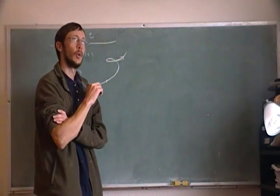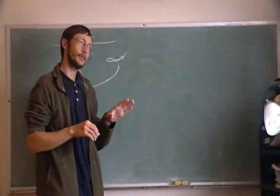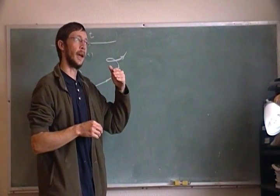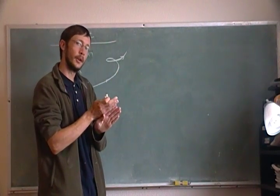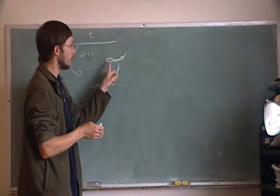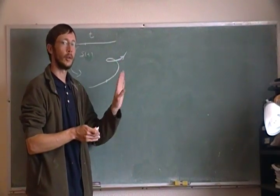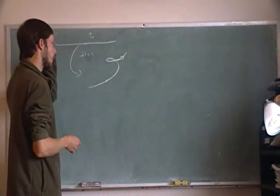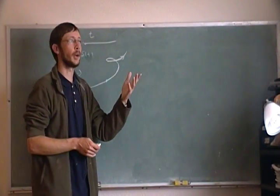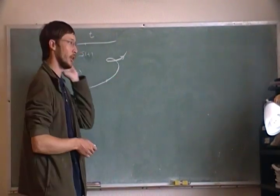So what we're going to do is introduce a new parameterization. This parameterization will have the property that it traces out the image with the same speed all the way throughout the curve. What we have to do is introduce what's called the arc length parameterization of this curve.